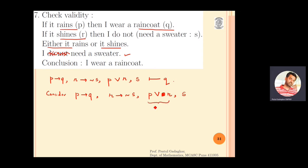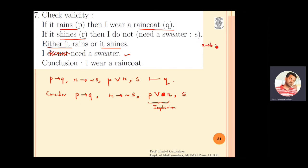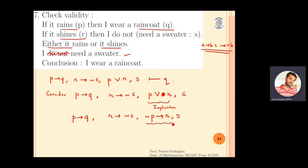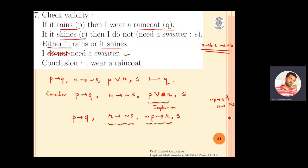I will convert p or r into an implication using the equivalence: a implies b is equivalent to negation a or b. So p or r becomes negation p implies r. The statements are now: p implies q, r implies negation s, negation p implies r, and s. Looking at negation p implies r and r implies negation s, by hypothetical syllogism we get negation p implies negation s.